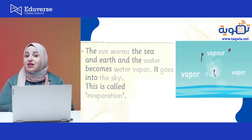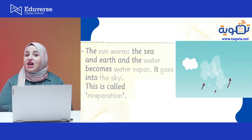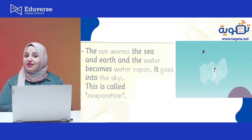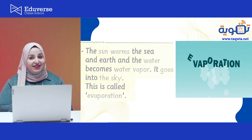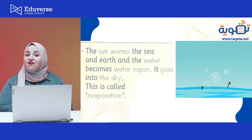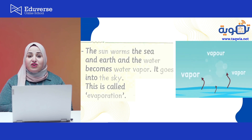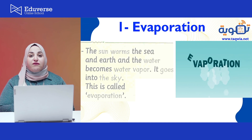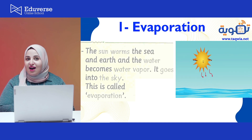The water cycle has some stages, and these stages are: evaporation, condensation, precipitation, and finally accumulation. So what is the first stage in the water cycle?